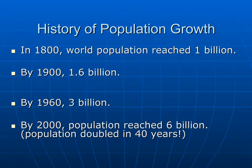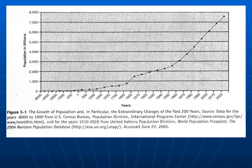Now we'll talk about the history of population growth. I find this fascinating. Since in 1800, world population reached 1 billion. By 1900, it was 1.6 billion. By 1960, 3 billion. And by 2000, the population reached 6 billion — the population doubled in 40 years. I think our descendants will look back on the late 1960s peak as the most significant demographic event in the history of the human population. And here's a graph which shows the steep rise in population growth in the 20th century.